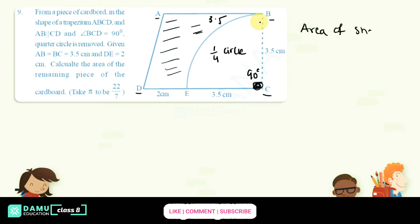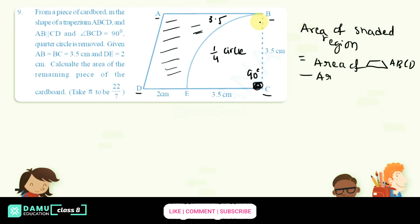We need to find the area of the shaded region. The area of the shaded region will be equal to the area of trapezium ABCD minus the area of sector BCE.